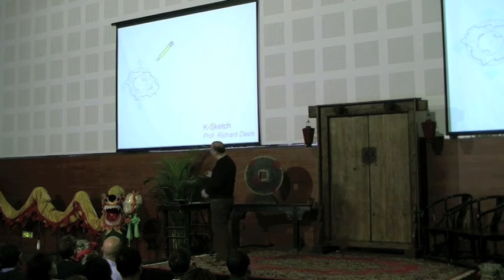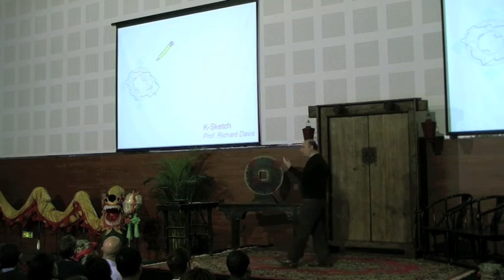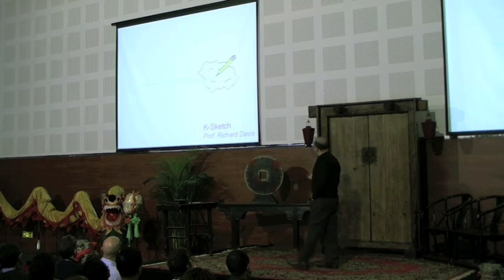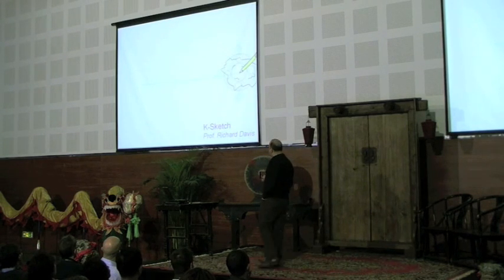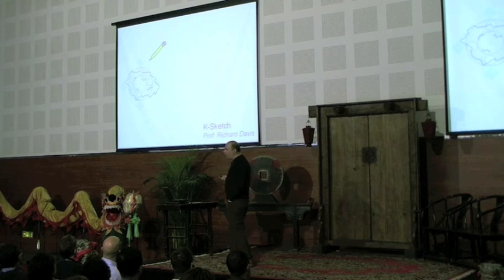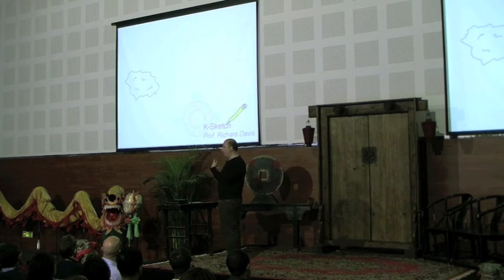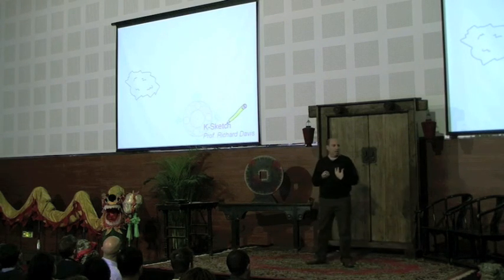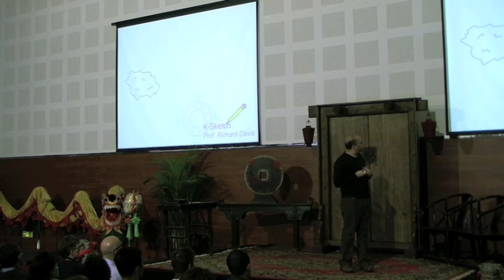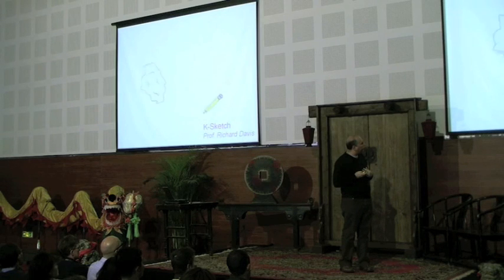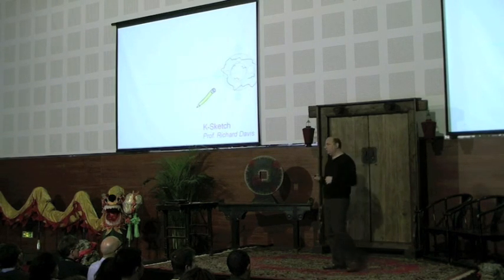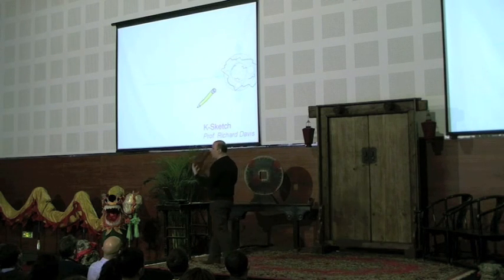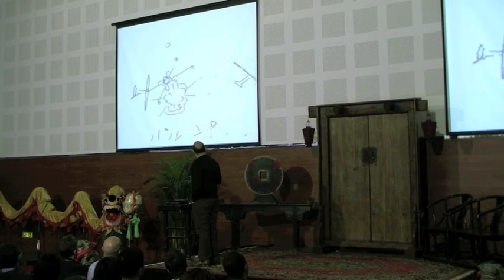Say a student wants to show an asteroid hitting the Yucatan and wiping out the dinosaurs. He draws the asteroid, says it's going to move like this. Then he goes back in time and adds a rotation — composing different motions together. That's where things get really complicated in existing tools. He just brings it back in time, adds the rotation motion, and you can scale things, change sizes, and do everything you might imagine. That was the core of the project.